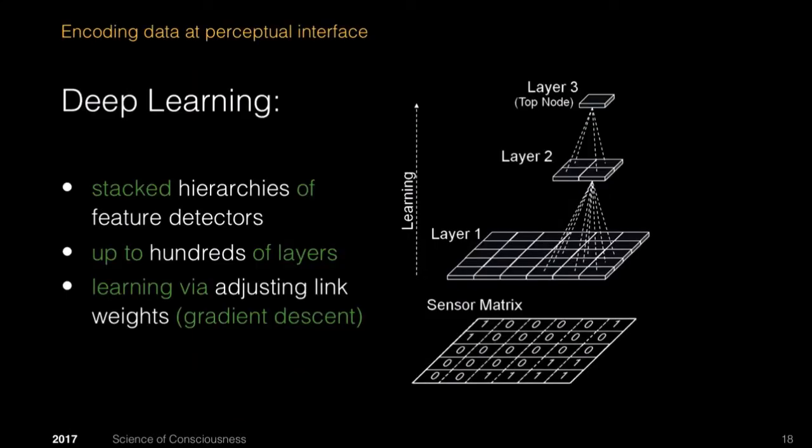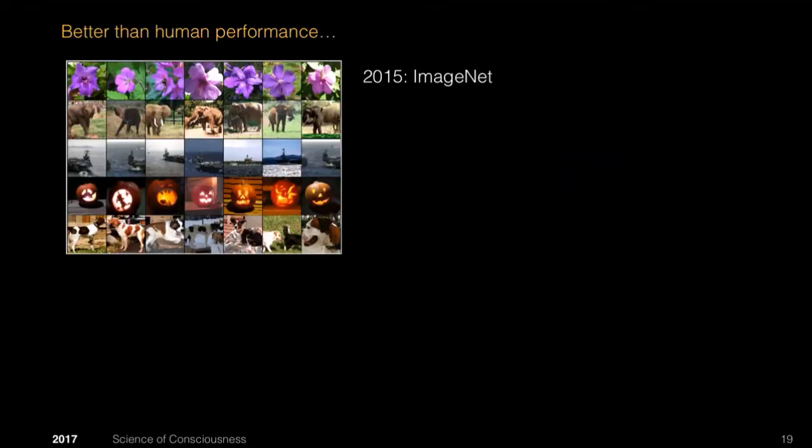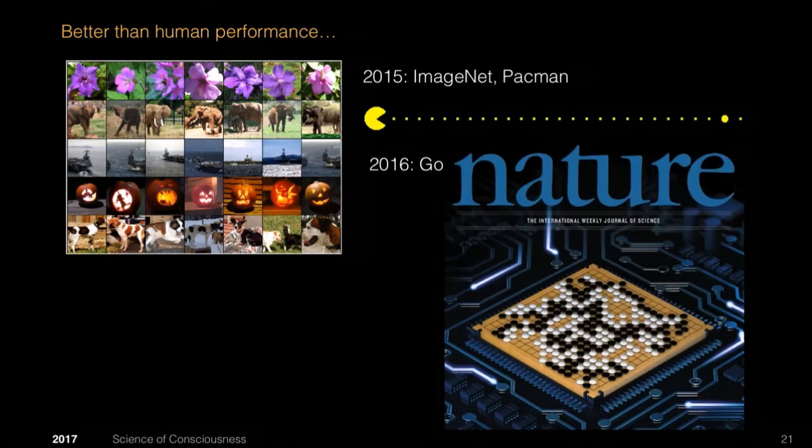Deep learning is basically using stacked hierarchies of layers which are feature detectors, and then uses a method largely gradient descent to approximate functions that allow us to classify objects and learn policies. This means that in 2015, these things outperformed humans in recognizing images in their database. They also got better than people at playing Pac-Man, being trained from scratch and not being told what to do. Last year, they outperformed people at the game of Go.